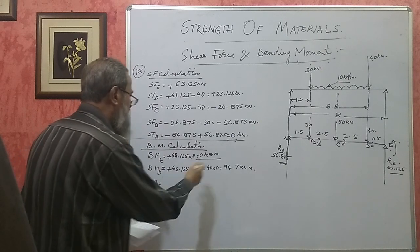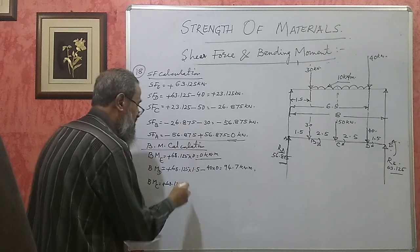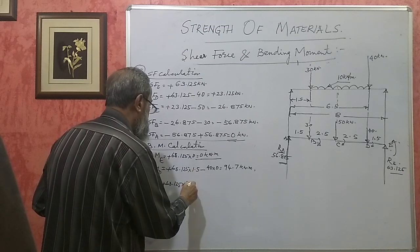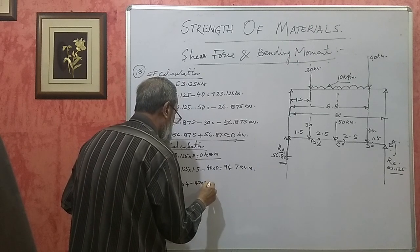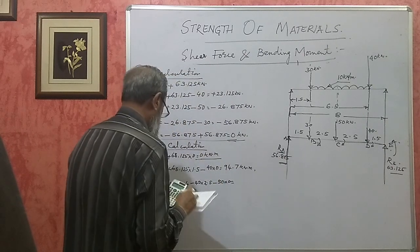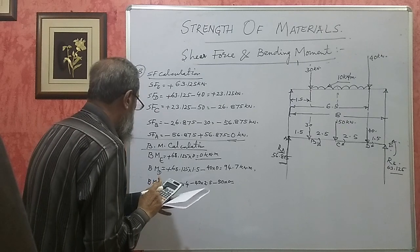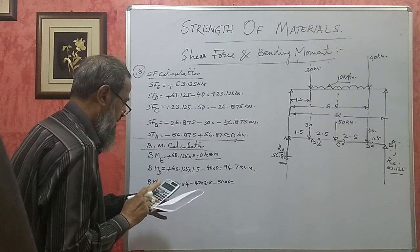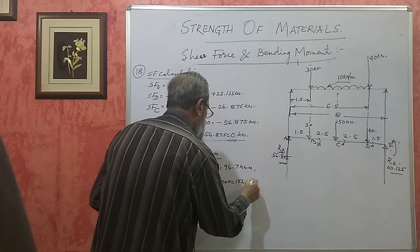BM at C: having moved 4 meters from E, BM = 63.125 × 4 minus 40 × 2.5 = 252.5 minus 100 = 152.5 kilonewton meter.